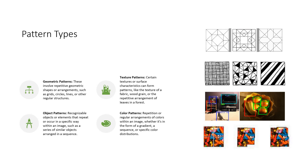Object patterns are recognizable objects or elements that repeat or occur in a specific way within an image — for example, a series of similar objects arranged in a sequence, like chairs, tables, monitors, or computers arranged in a pattern. Color patterns, as the name clearly tells you, are the repetition or regular arrangement of colors within an image — whether in the form of a gradient, a sequence, or specific color distributions. So we have four types: geometric, texture, object, and color patterns.